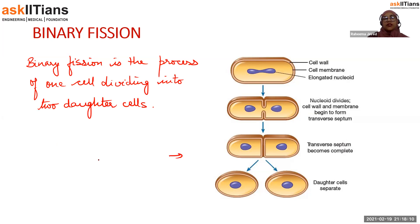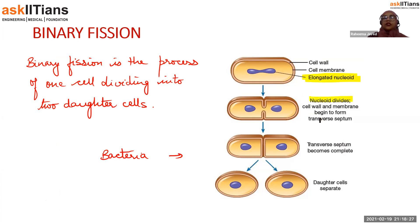Here binary fission is shown in the case of a bacterium, where the bacterial nucleoid elongates first, and after the nucleoid divides, the cell wall and the membrane begin to form a transverse septum. This transverse septum covers the whole length of the cell and finally the cell divides into two daughter cells.